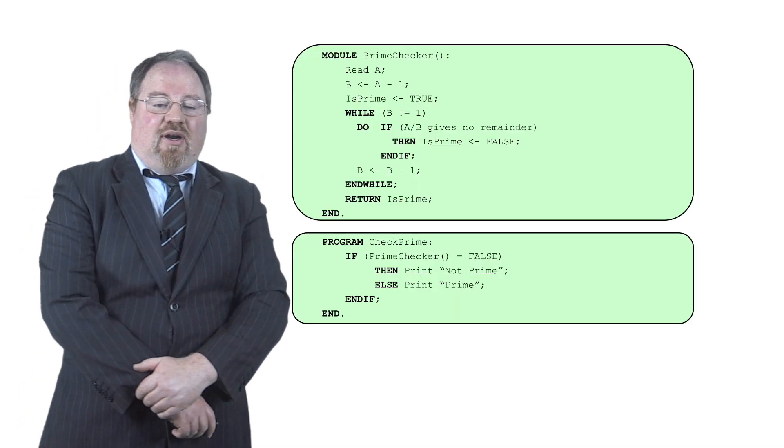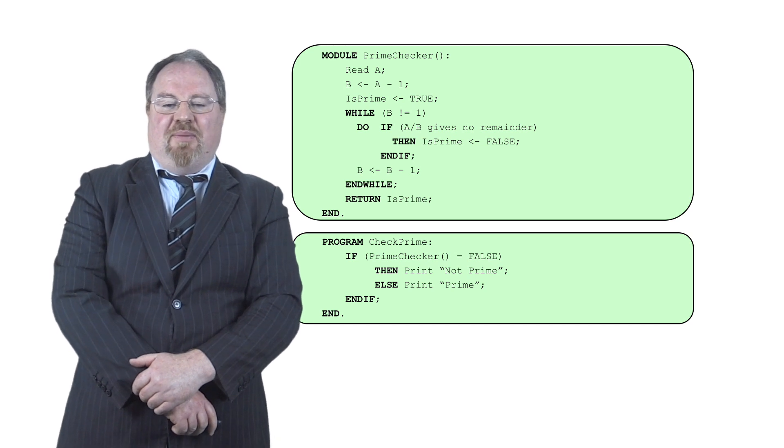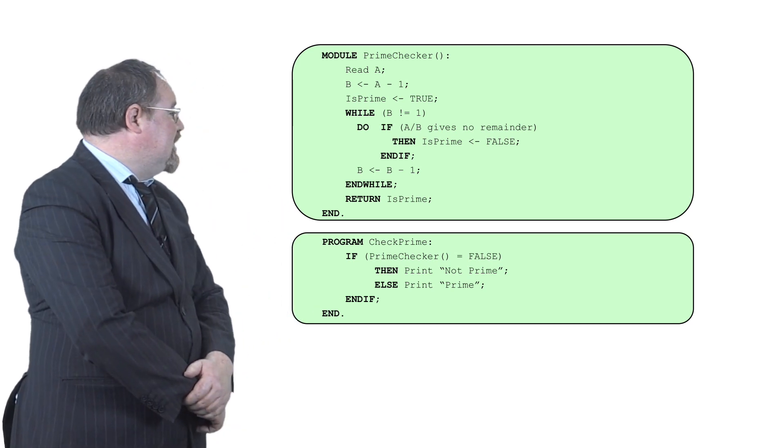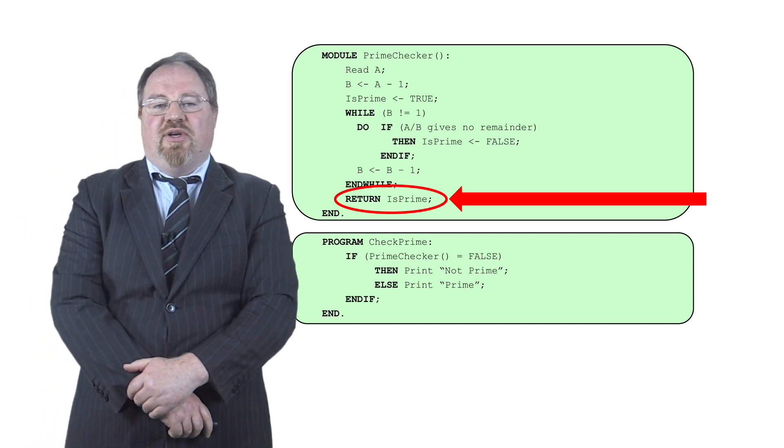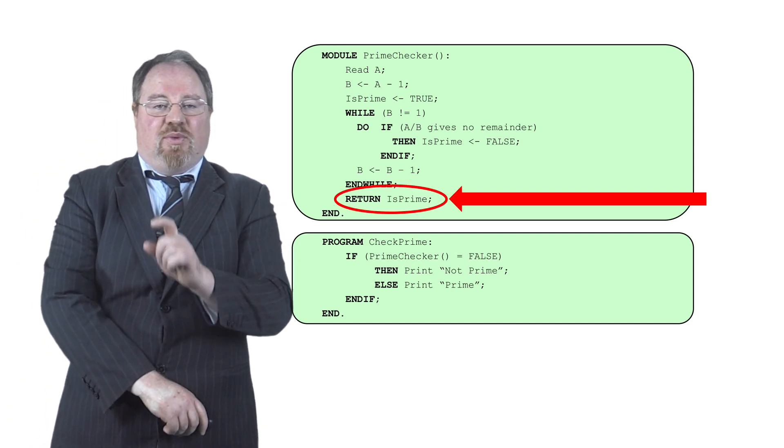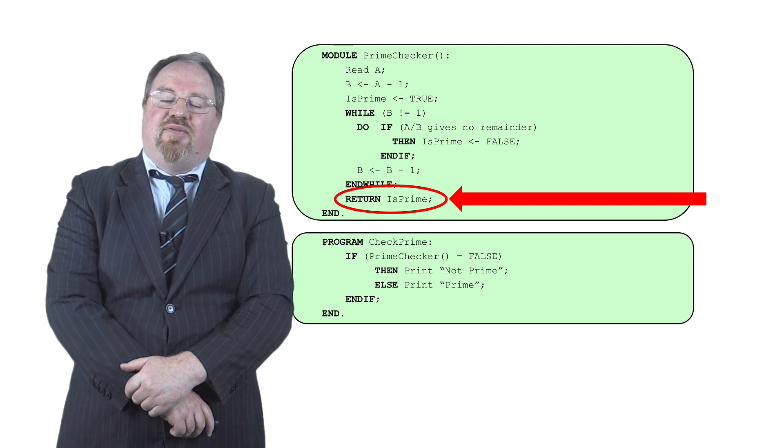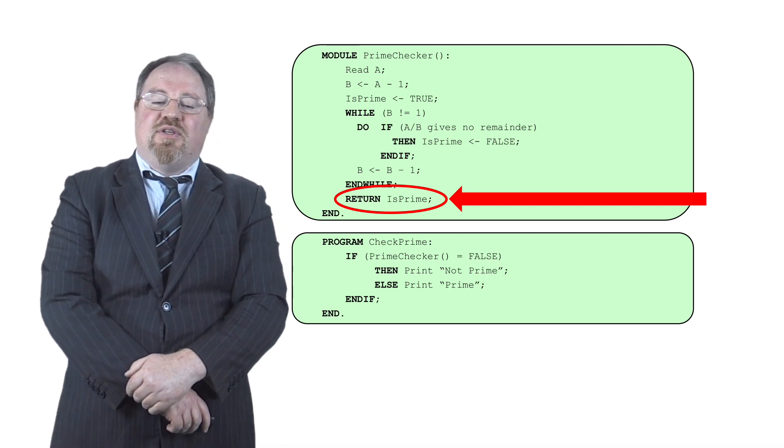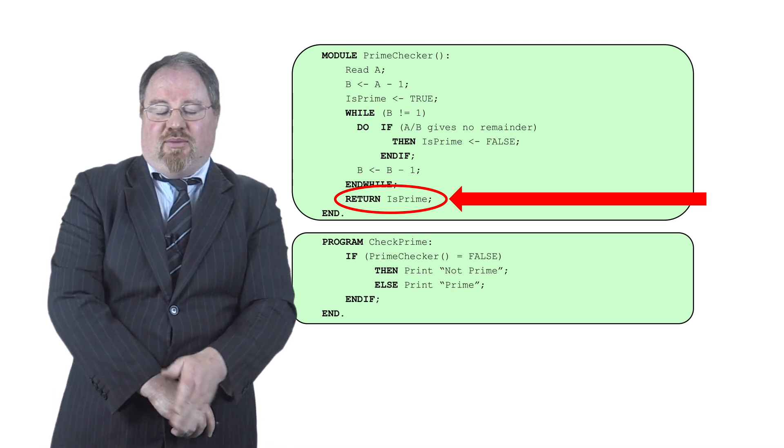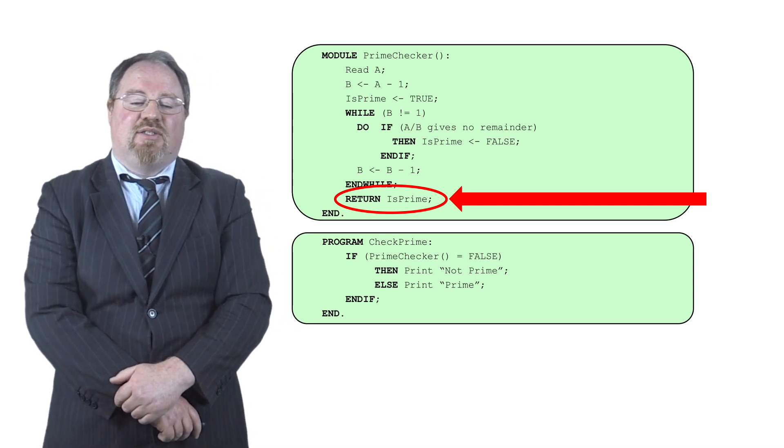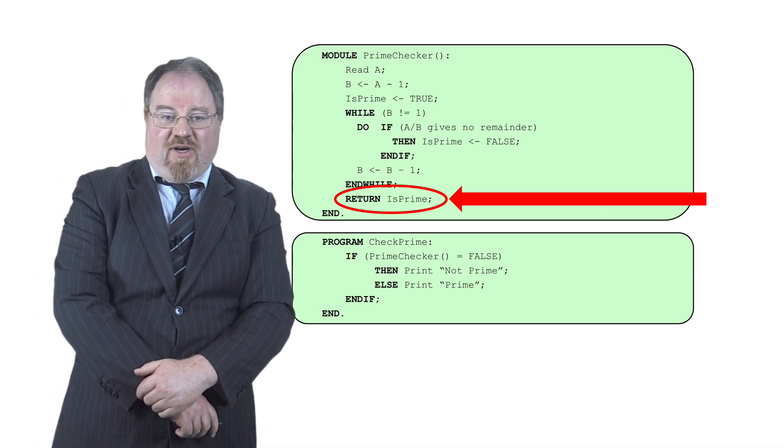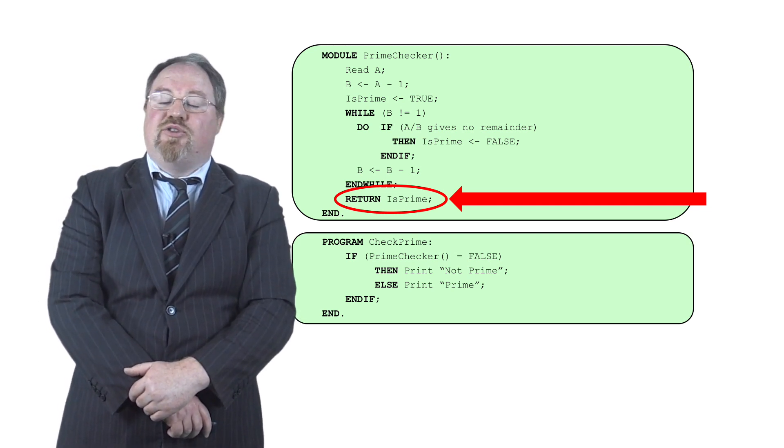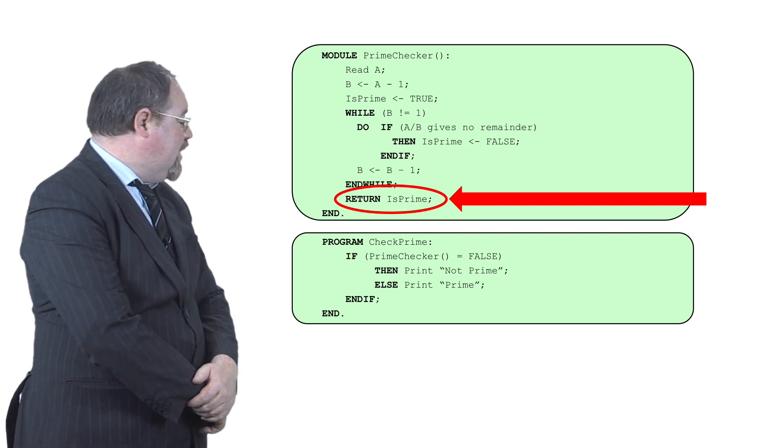So with our code, our prime checker and our check prime programs as before, we know that there is a statement return is prime. So in the module or method, we have at the end of the program a return statement that says, once you've determined whether the number input is prime or not, return that Boolean variable from the method or module prime checker to the program that's called it, in this case, check prime.